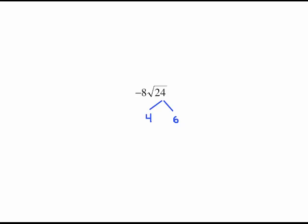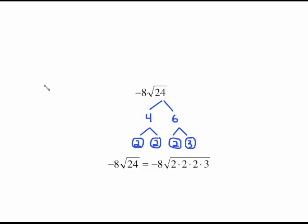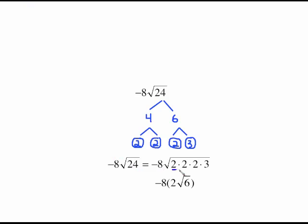For 24, the factor tree goes to 4 times 6, neither of which are prime, so keep factoring: 2 times 2 for 4, and 2 times 3 for 6. We bring the negative 8 right down. There's our factorization of 24. A pair of 2's means a 2 comes outside. We have 2 times 3 left over, giving us a 6 inside the square root. Multiplying the coefficients gives us negative 16 times radical 6.